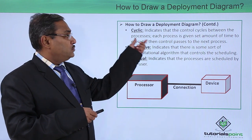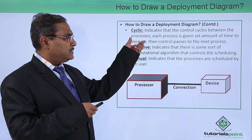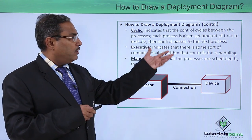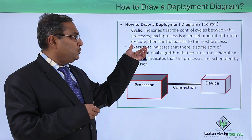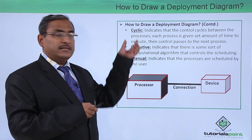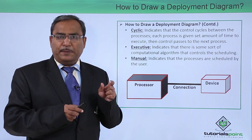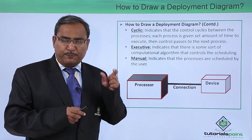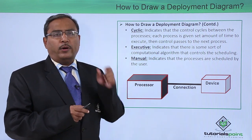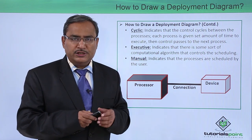The next scheduling type is cyclic, which indicates that control cycles between processes. Each process is given a set amount of time to execute, then control passes to the next process. A time quantum or time slice is given to each process, and when this quantum expires, the quantum is allocated to the next process in a round-robin scheduling way.